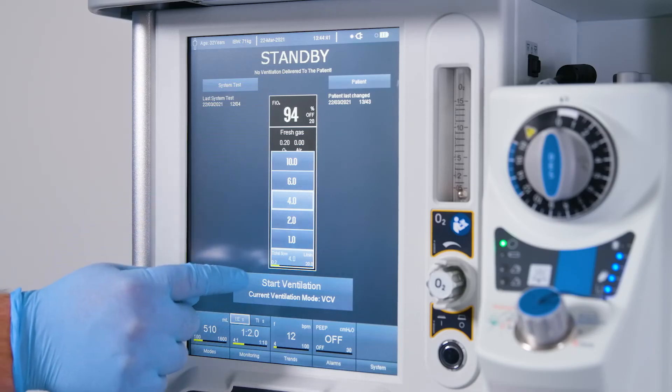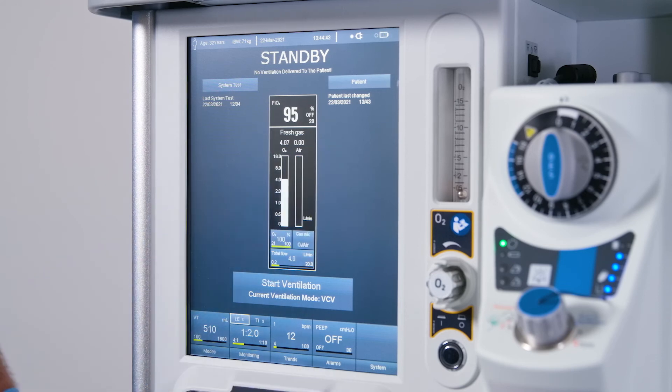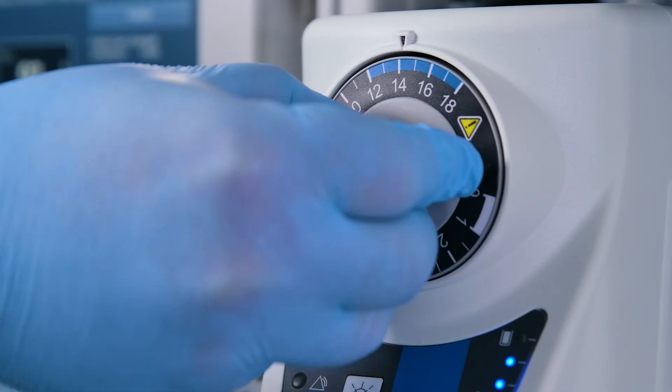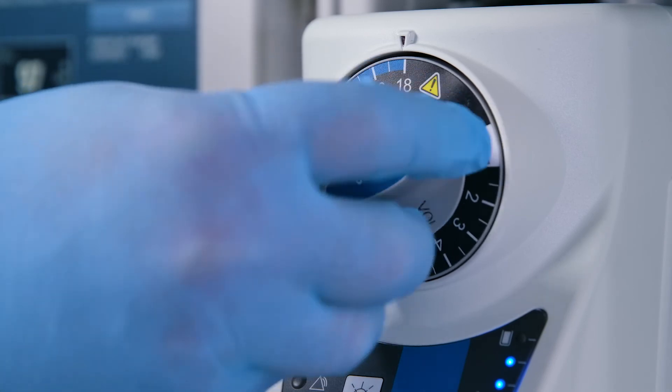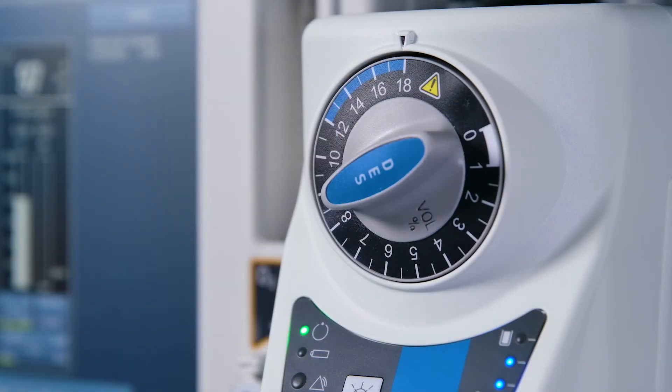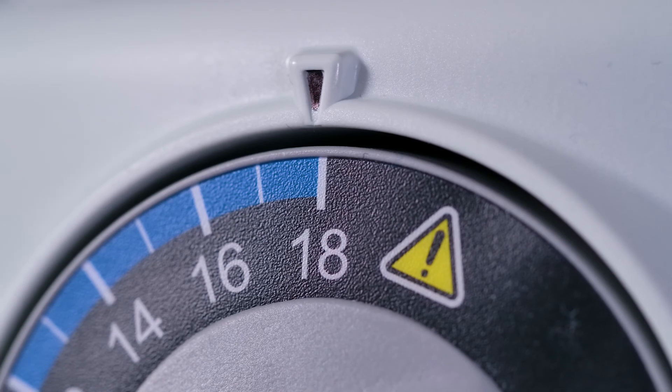Set a fresh gas flow of 4 litres per minute on the anesthetic machine. Set the concentration control dial to 18%. Purge the vaporizer for a minimum of 30 seconds.